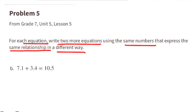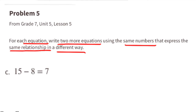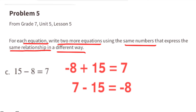Part b: 7.1 plus 3.4 equals 10.5. Additional equations: 3.4 plus 7.1 equals 10.5 (showing addition order doesn't matter), 10.5 minus 7.1 equals 3.4, and 10.5 minus 3.4 equals 7.1. Part c: 15 minus 8 equals 7. Additional equations: negative 8 plus 15 equals 7, 7 minus 15 equals negative 8, and 7 plus 8 equals 15.